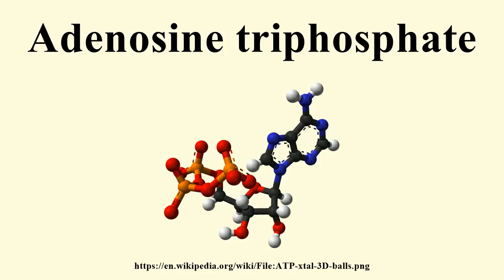ATP is used as a substrate in signal transduction pathways by kinases that phosphorylate proteins and lipids. It is also used by adenylate cyclase, which uses ATP to produce the second messenger molecule cyclic AMP. The ratio between ATP and AMP is used as a way for a cell to sense how much energy is available and control the metabolic pathways that produce and consume ATP.